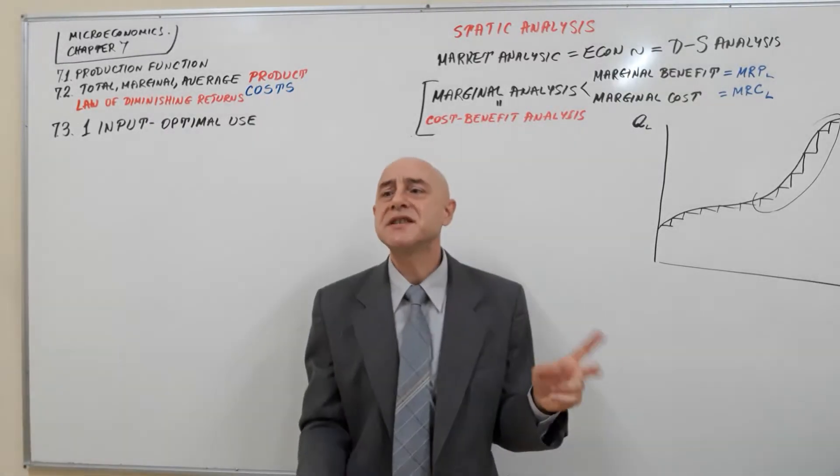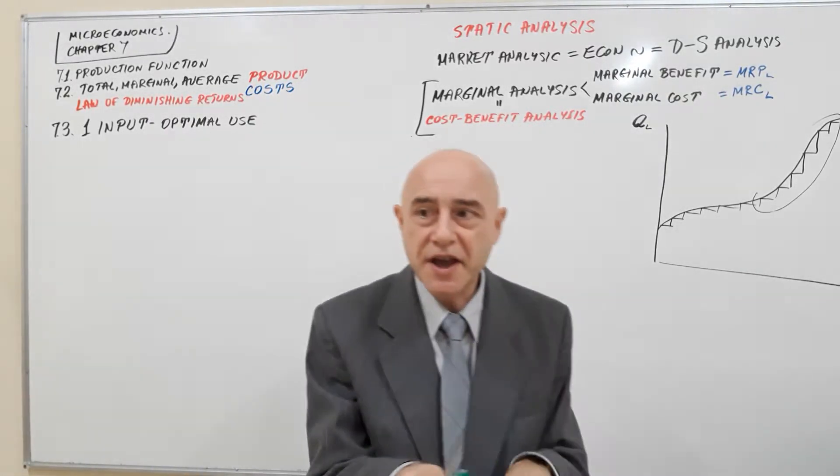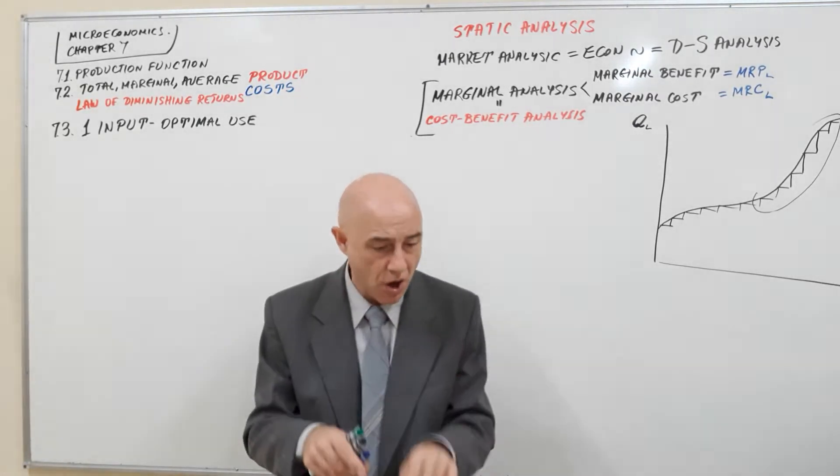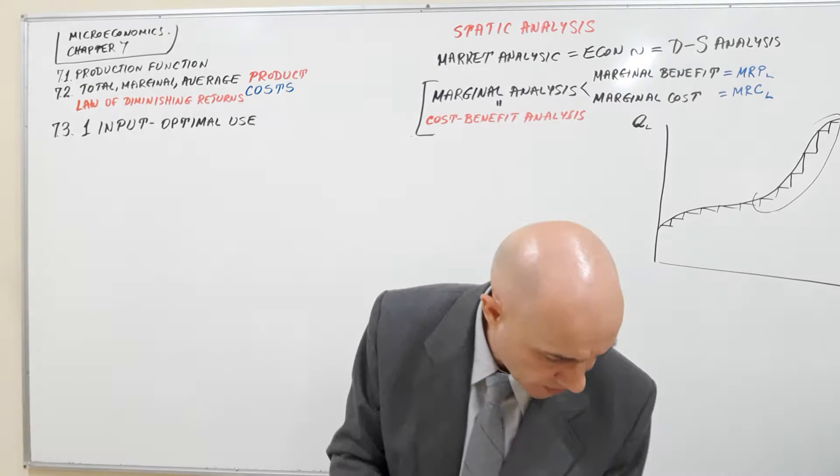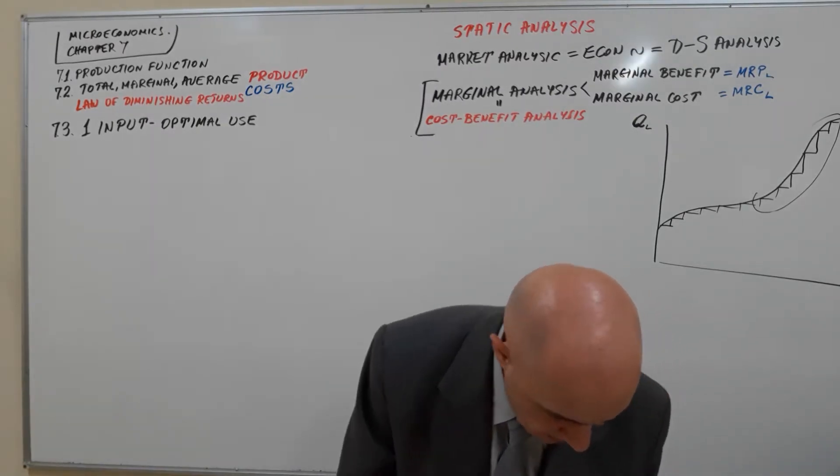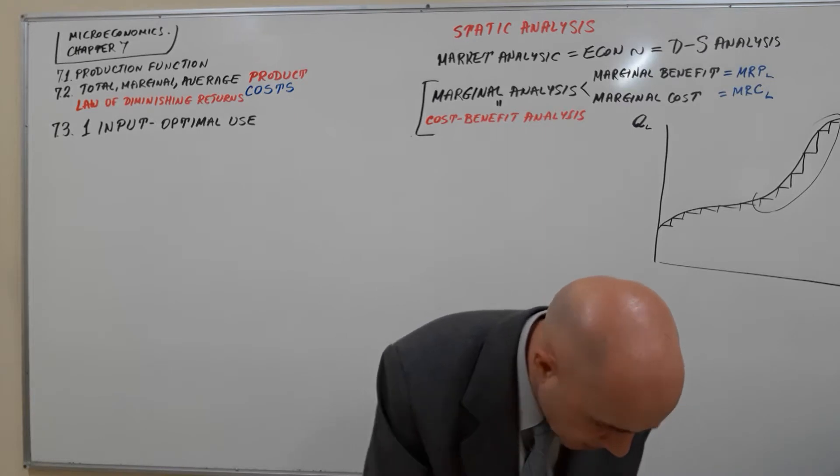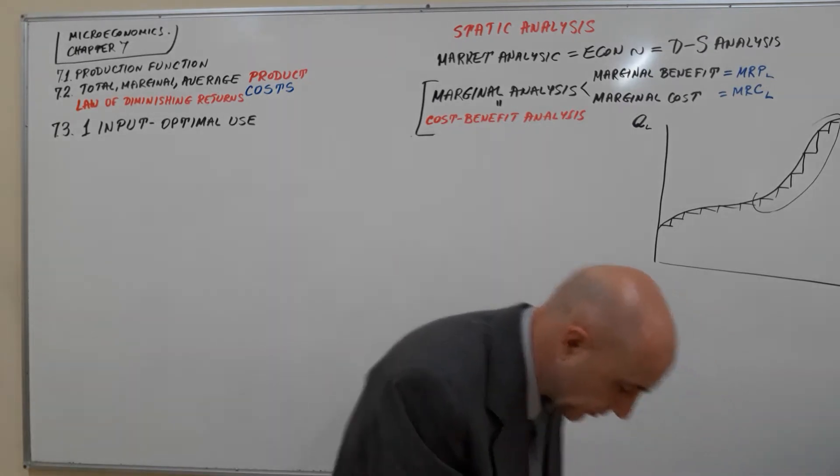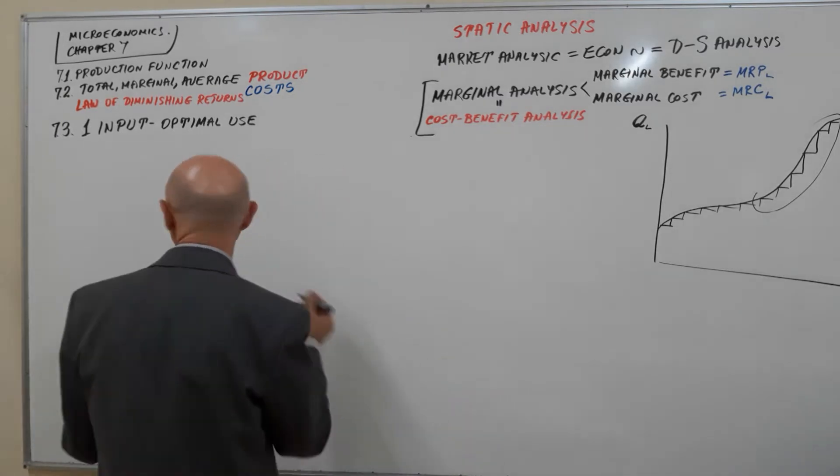Now we skip section 7.4, too complicated with two inputs. We don't need that. We skip 7.5 on optimal combination of how you combine capital and labor, and we move on to 7.6, which is returns to scale.